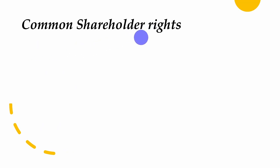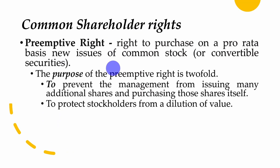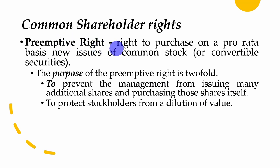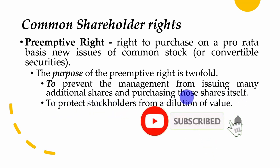A common shareholder has certain rights. The first is the pre-emptive right — the right to purchase, on a pro-rata basis, new issues of common stock or convertible securities. If the company decides to issue new shares, the common shareholder has a pre-emptive right to buy those shares on a pro-rata basis. The purpose is to prevent management from issuing additional shares and retaining them itself, and to protect stockholders from dilution of value.